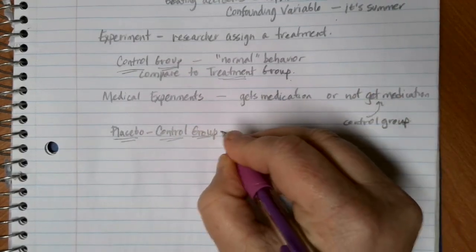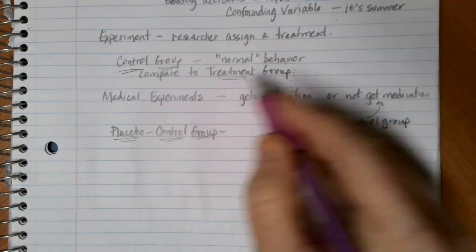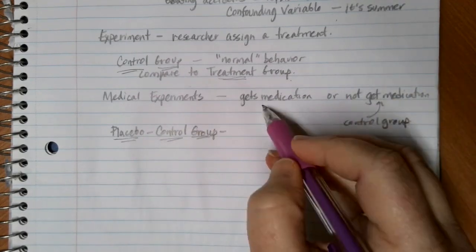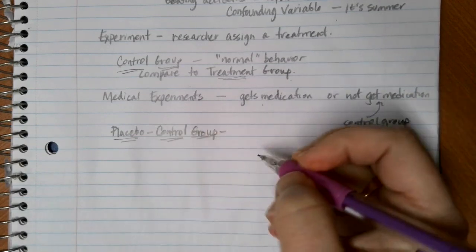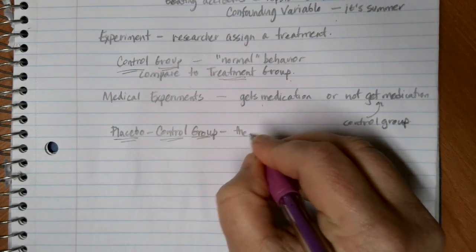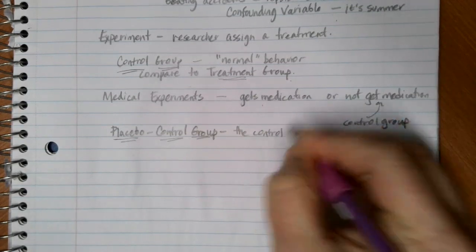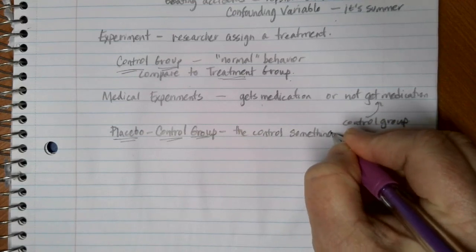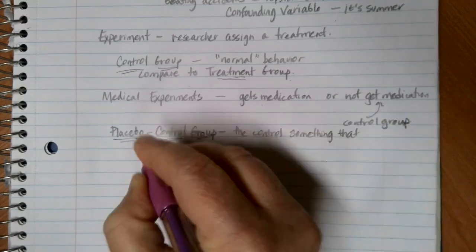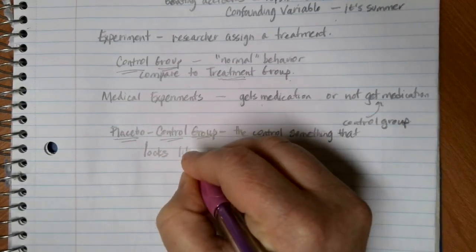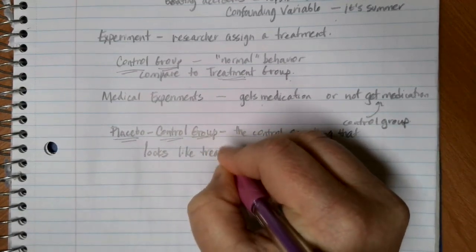In a placebo control group, rather than giving nothing for your control group, like getting a medication or not getting a medication. In a placebo control group, the control group gets something that looks like the treatment.